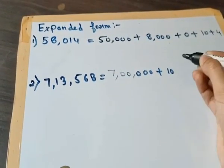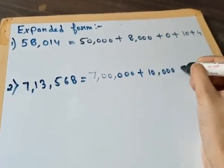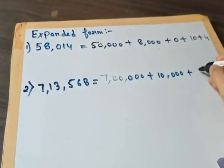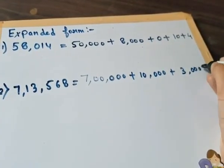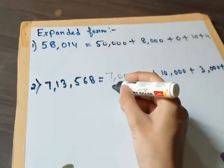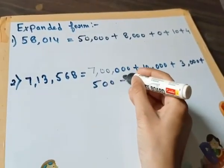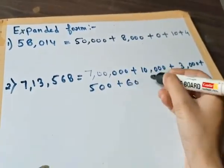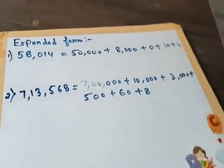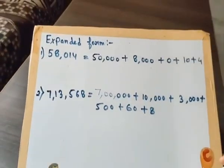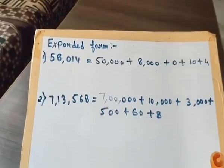Now next one is at the ten thousand place, so this will be 10,000, next is 3,000 plus 500 plus 60 plus 8. So in this way you have to do the expanded form.